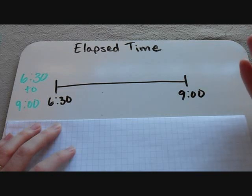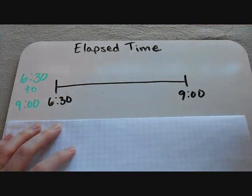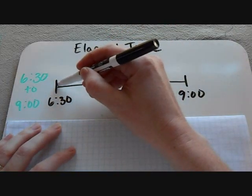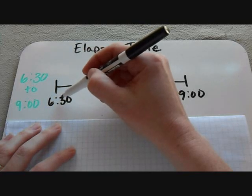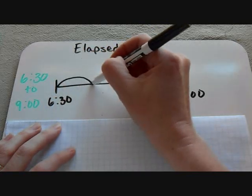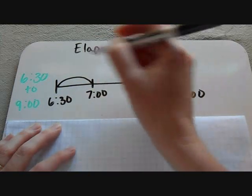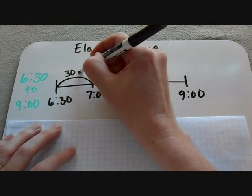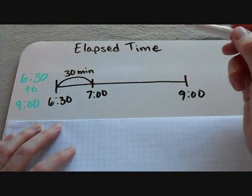And then, just like I'm going to use a number line when we add or subtract, I'm going to make jumps to get from 6:30 to 9 o'clock. So the first thing that I try to do if I have a time that's not an exact hour is I jump until the next full hour. So in this case, the next full hour is 7 o'clock, and then I label up here how much time has passed from 6:30 to 7 o'clock.